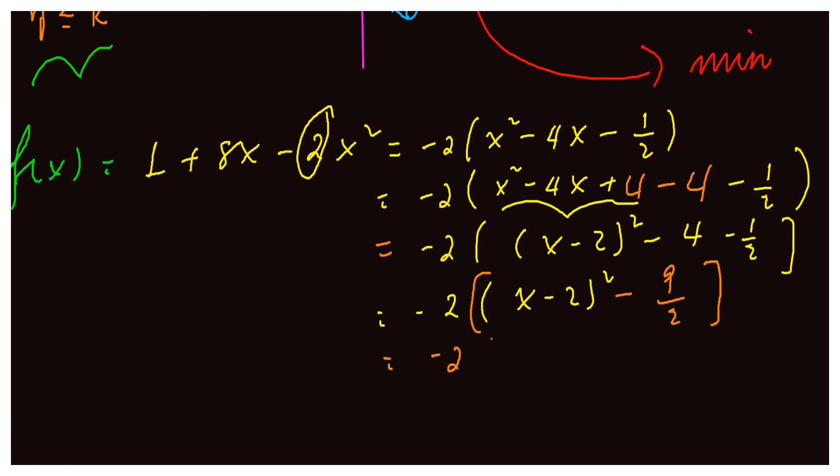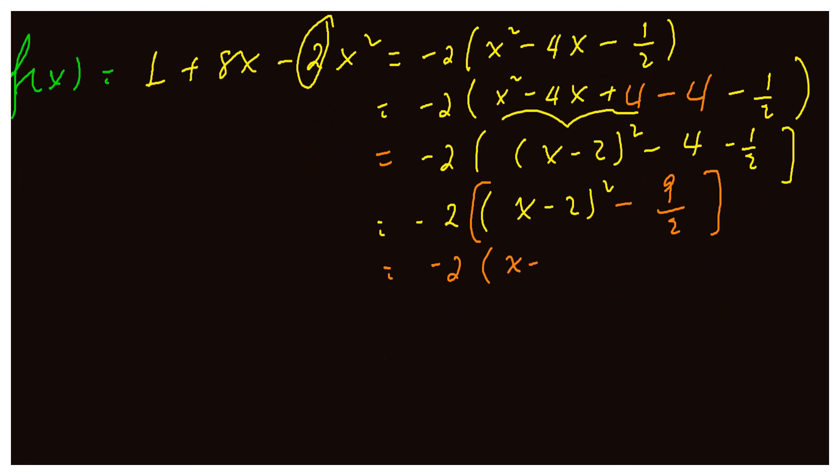So negative times negative, so this will be (x - 2)² minus 2 times minus 9/2, we get 9.